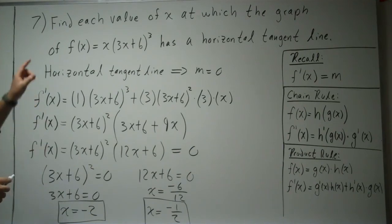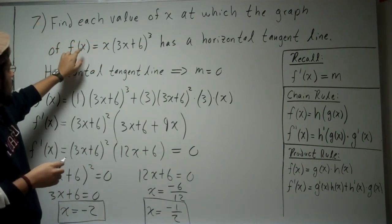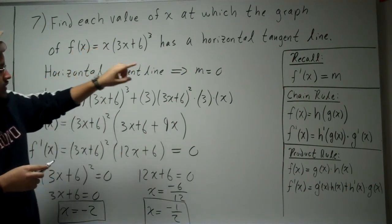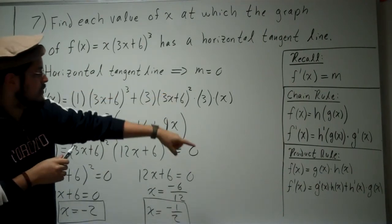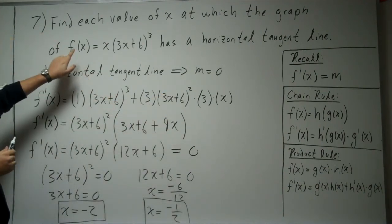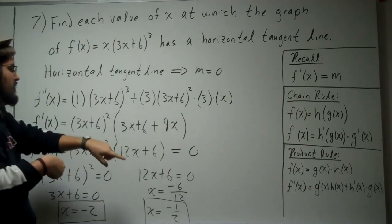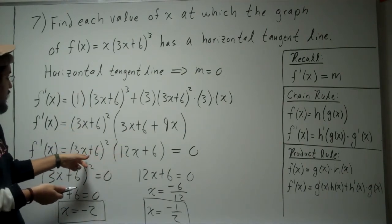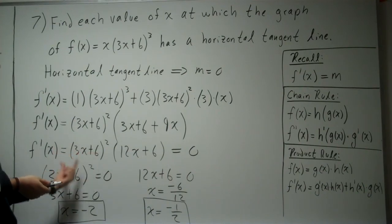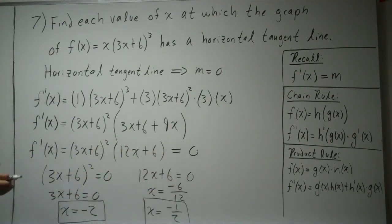Those are the two x values. So, find each x value at which the graph has a horizontal tangent line — if you plug in x = -2 or x = -1/2, you're going to have a horizontal tangent line, m = 0. To recap: we used the product rule to find the derivative, and inside that product rule we applied the chain rule. Once we did that, we factored and set each factor equal to 0, solved for the x values, and that's it.